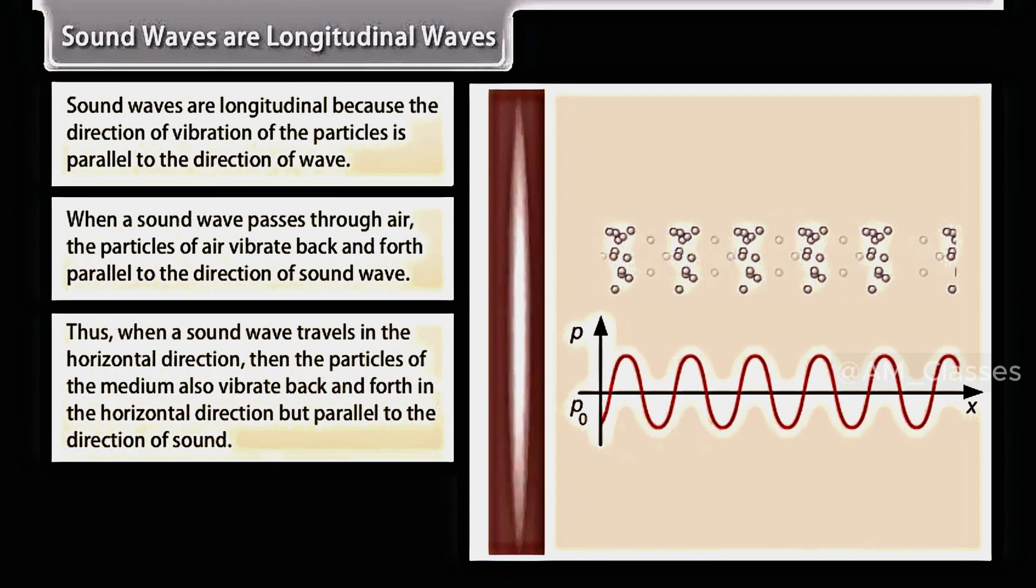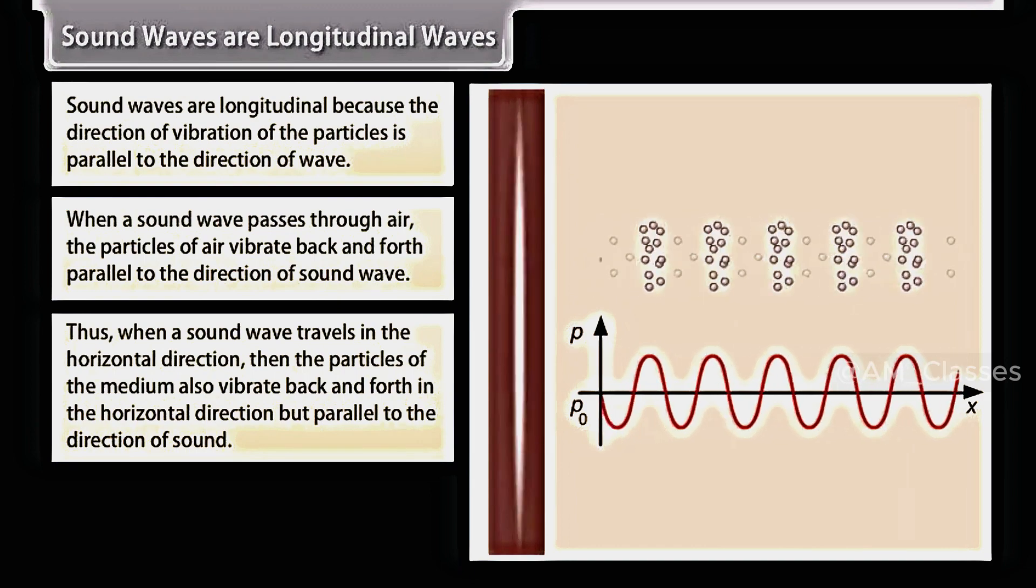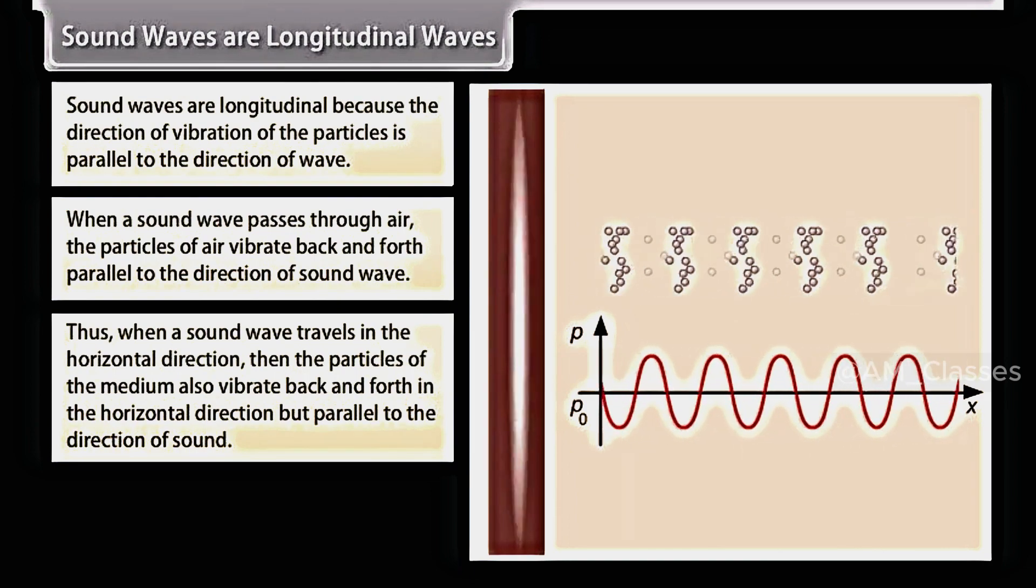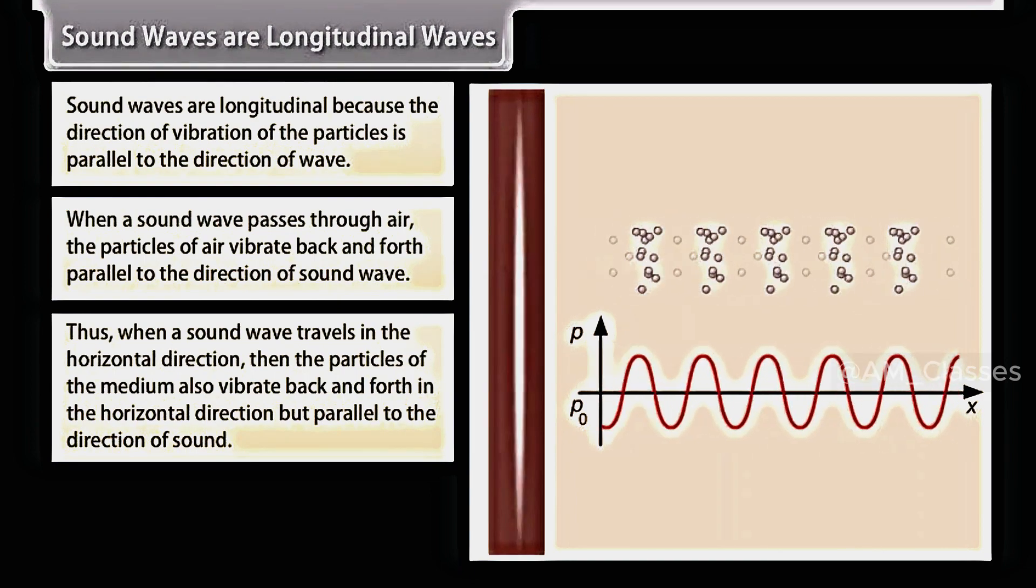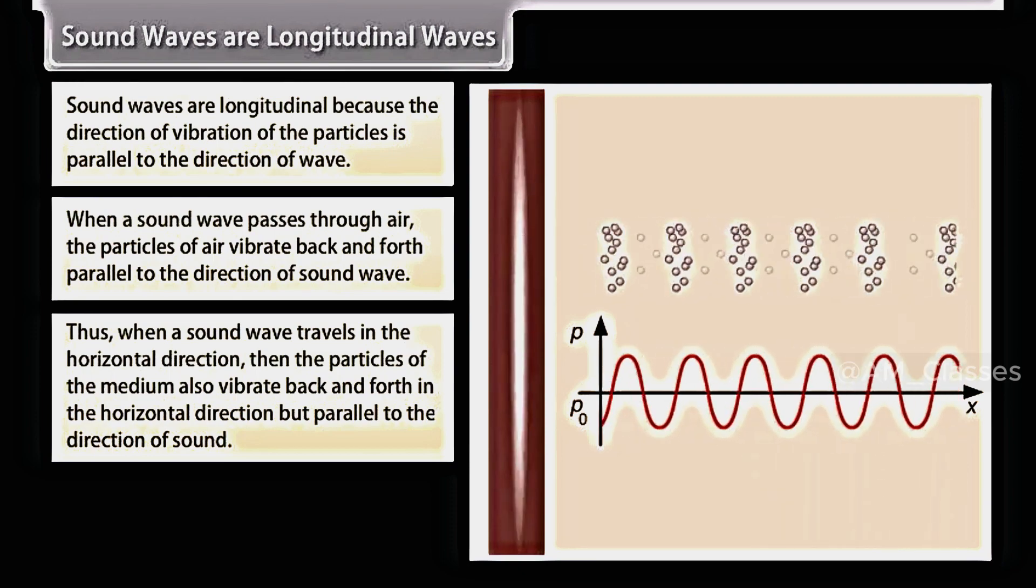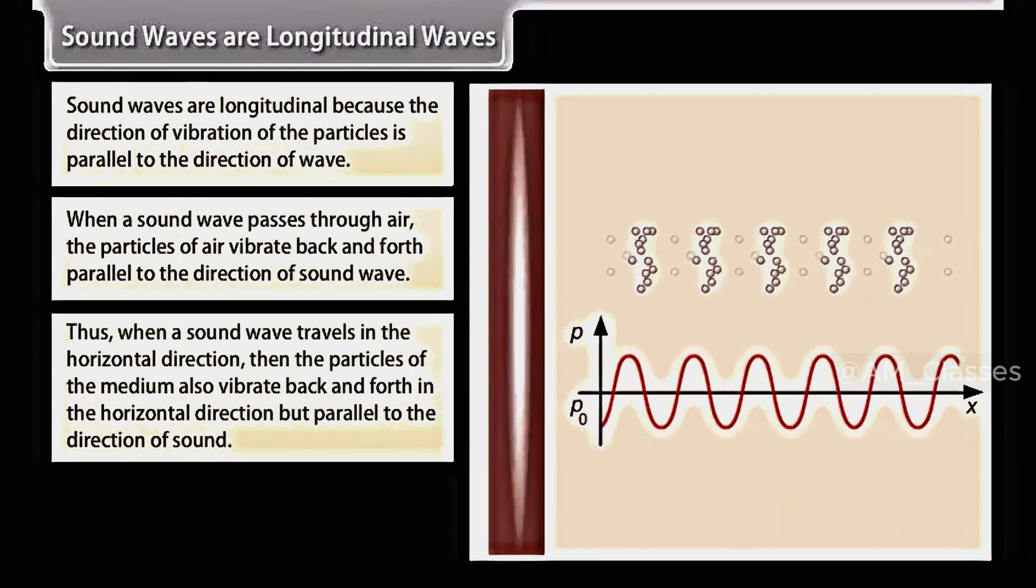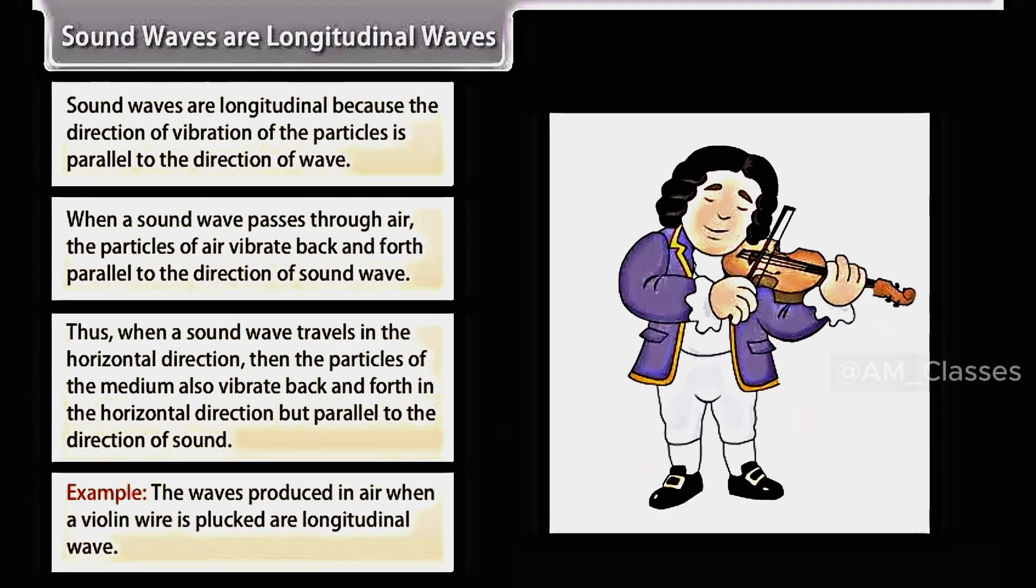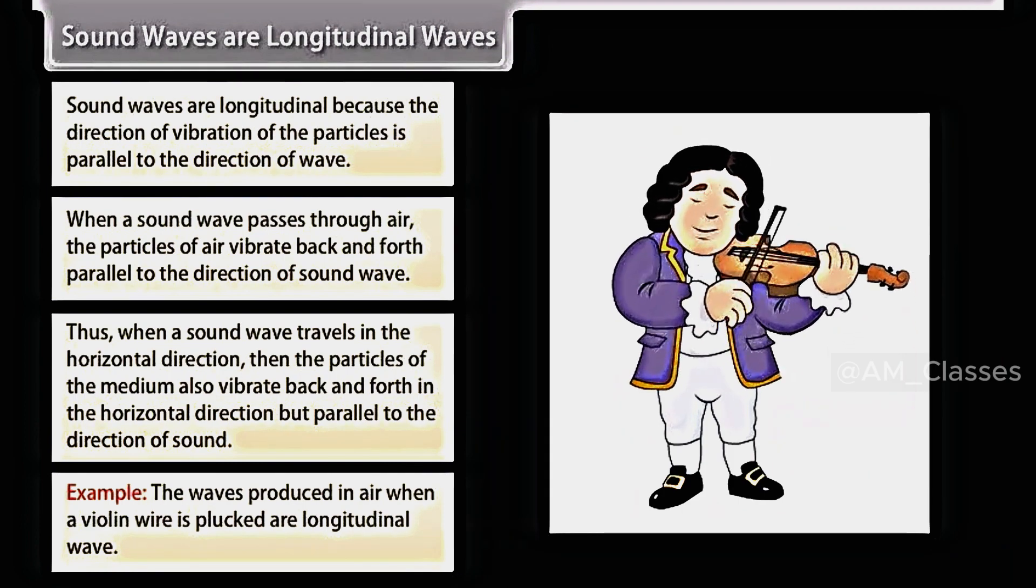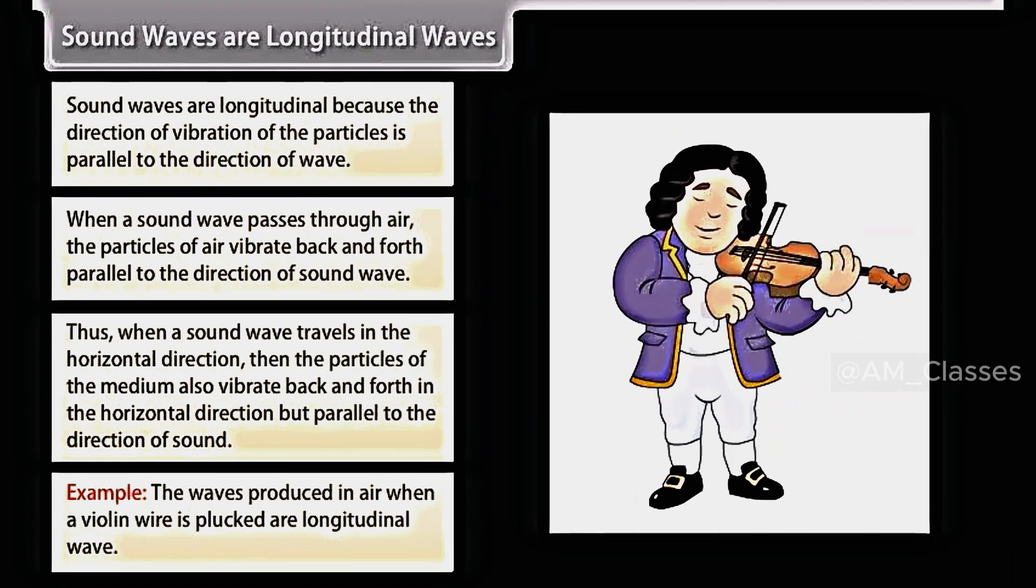Thus, when a sound wave travels in the horizontal direction, then the particles of the medium also vibrate back and forth in the horizontal direction but parallel to the direction of sound. For example, the waves produced in air when a violin wire is plucked are longitudinal waves.